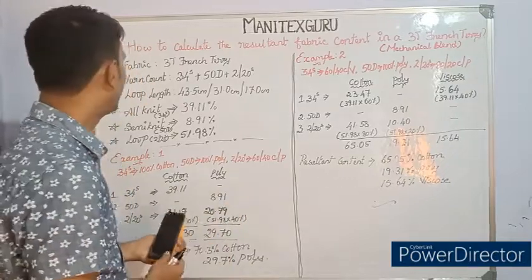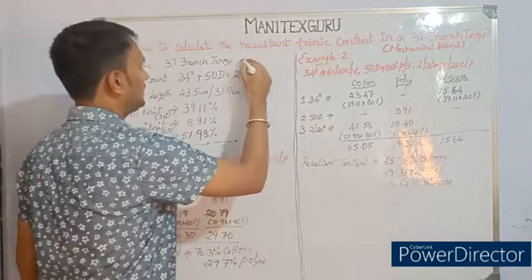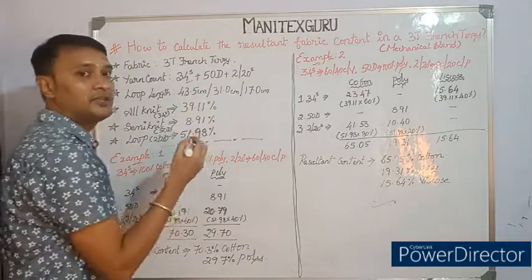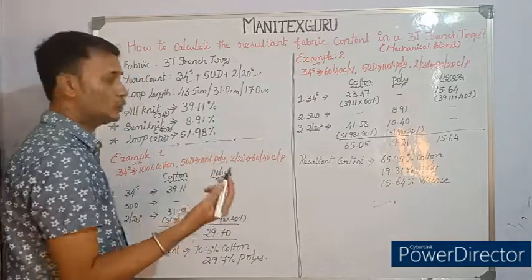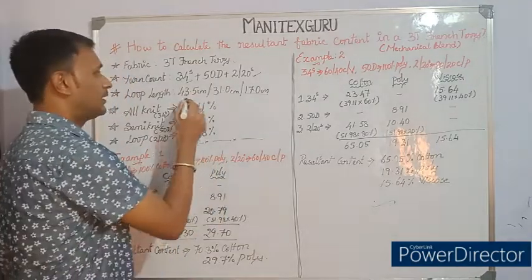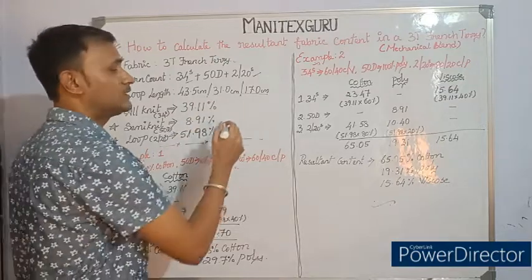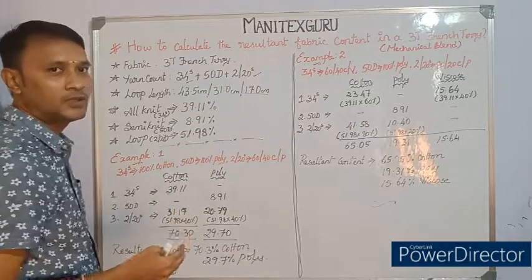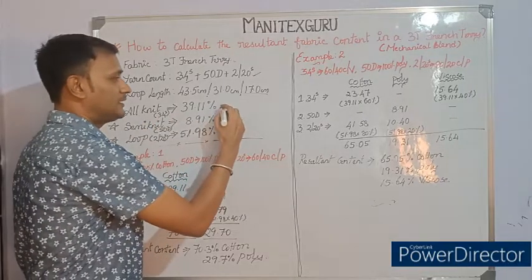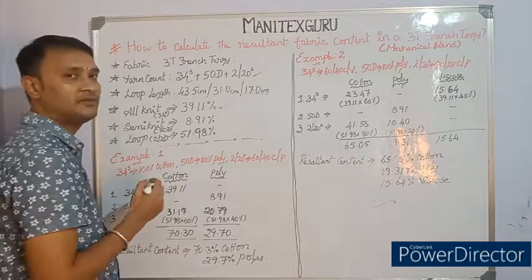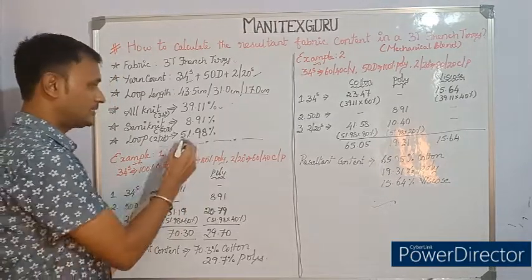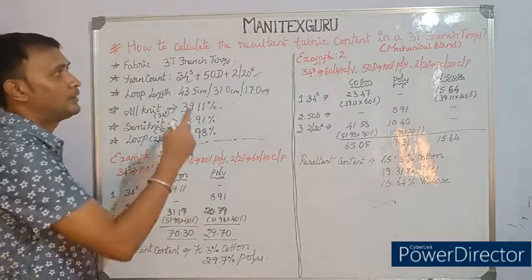Since this is a continuation video, I have taken the results of the previous video. The fabric quality is three-thread French terry. The yarn counts considered in the previous video are: 34s in the all-knit, 50 denier polyester in the semi-knit, and 2/20s in the looper. The loop lengths are 43.5 cm, 31 cm in the semi-knit, and 17 cm in the looper. From those, the yarn percentage contributions are: all-knit 34s = 39.11%, semi-knit 50 denier polyester = 8.91%, and looper 2/20s = 51.98%.